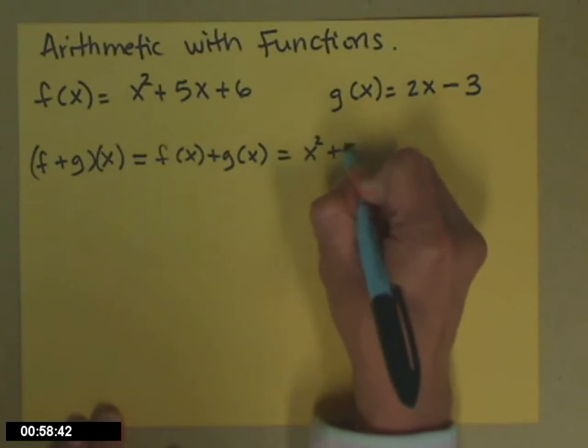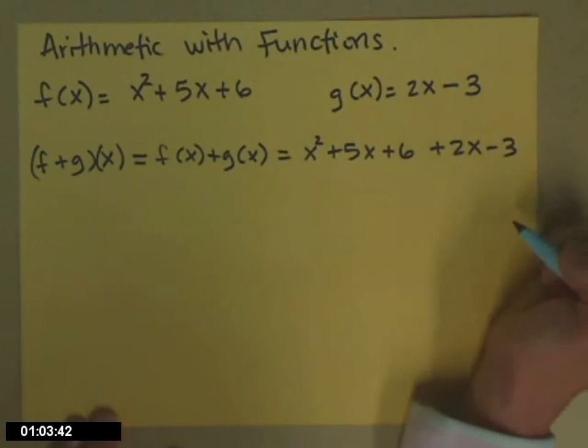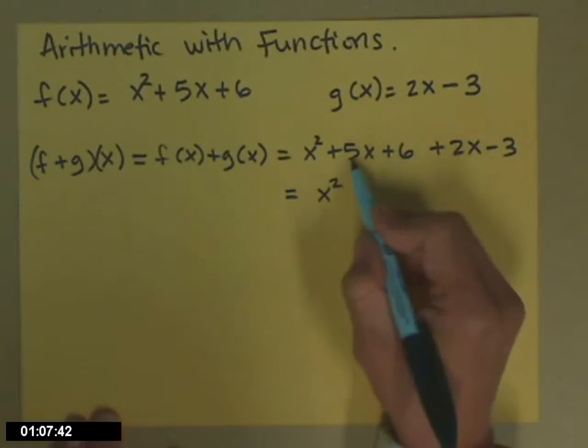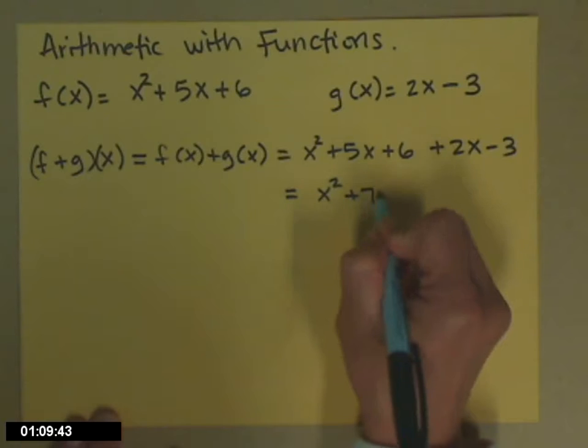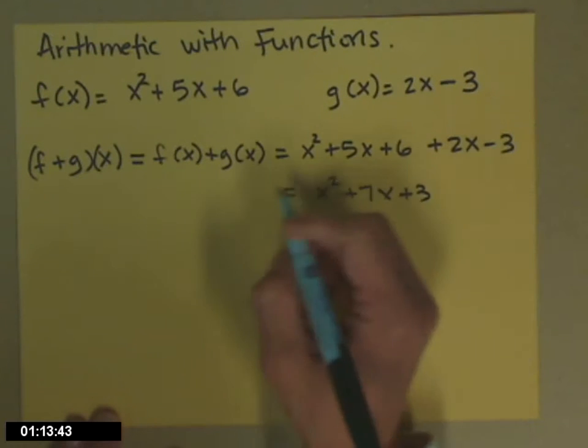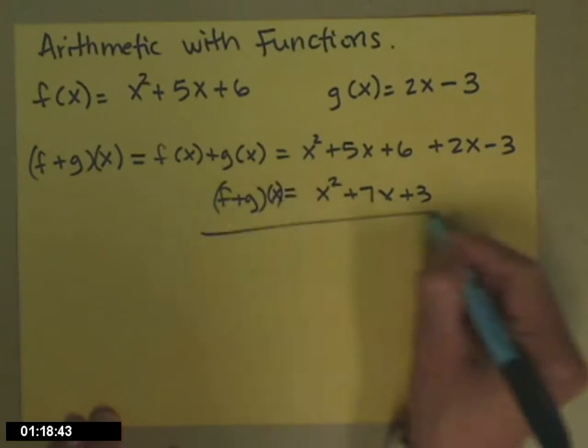So for gory detail on the first one, there's f of x, here's g of x, and then for my answer I will combine those like terms. So 5x plus 2x is 7x and 6 minus 3 is plus 3. So my new function f plus g of x equals.